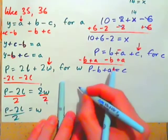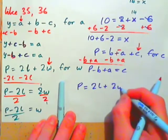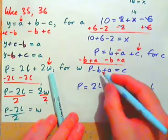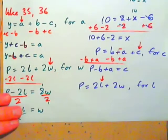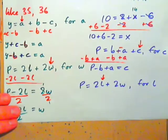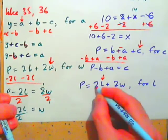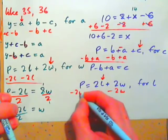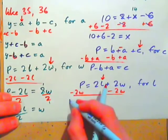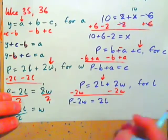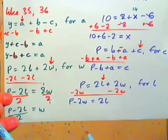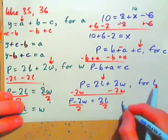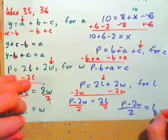For fun, try P equals 2L plus 2W, solve for L. L has been multiplied by 2, then 2W has been added. Subtract 2W from both sides first: P minus 2W equals 2L. Then divide both sides by 2, and we have P minus 2W all over 2 equals L.